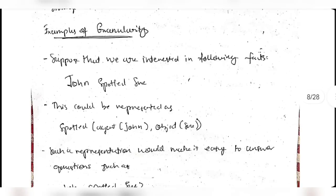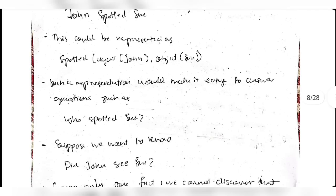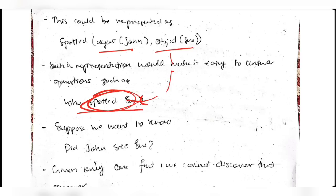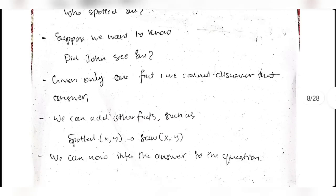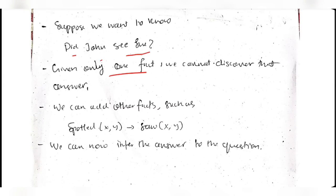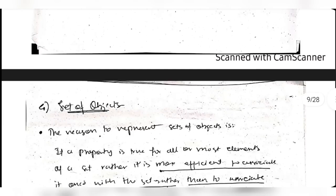An example of granularity: John spotted Sue can be represented as spotted(john, sue). Such a representation may not make it easy for AI to answer questions like 'who spotted Sue?' Also, given only one fact we cannot discover if John saw Sue - we need additional facts like 'if spotted, then saw.' AI cannot easily infer additional relationships from a single granular fact.